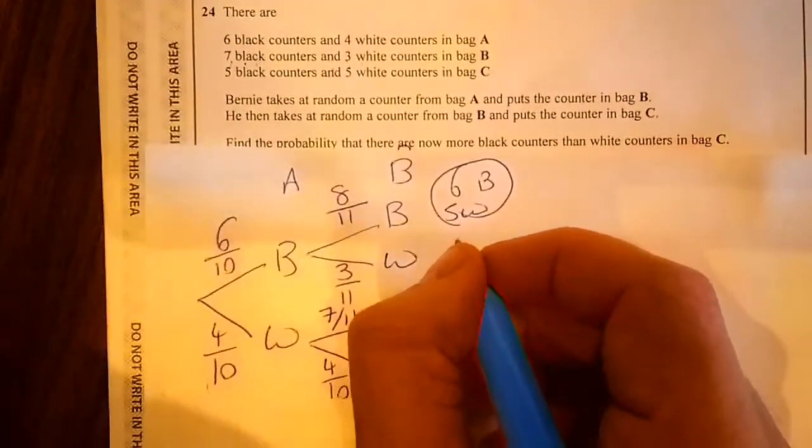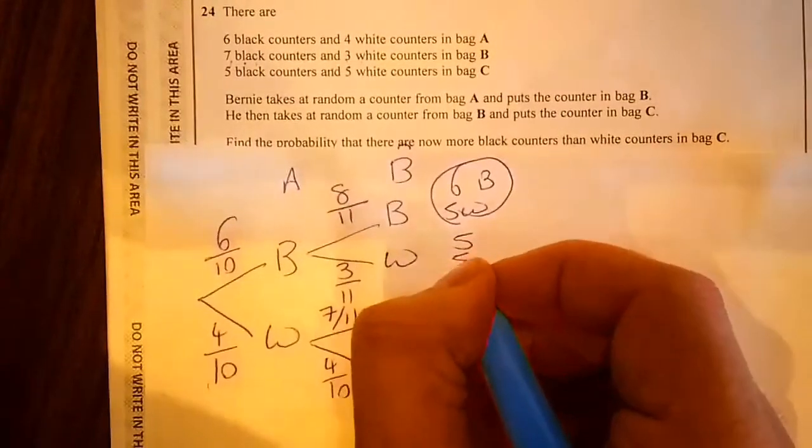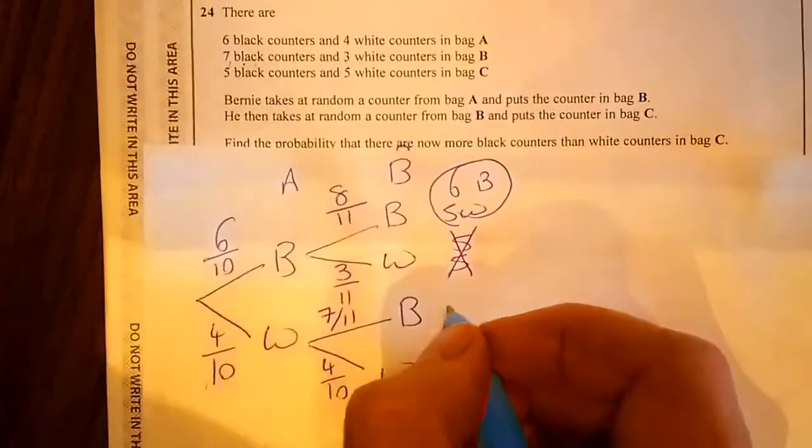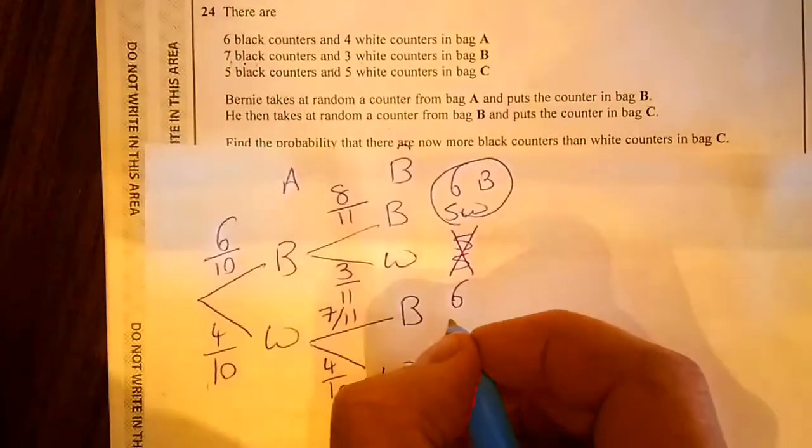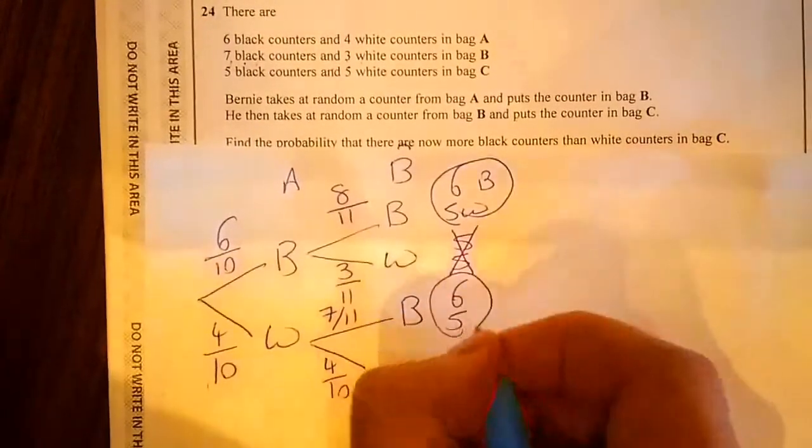The next one is I'm going to have 5 black and 5 white, so I don't care about that. This one here I'm going to have 6 black counters and 5 white. I care about that.